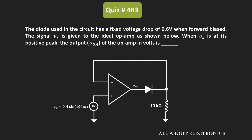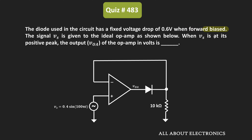Hey friends, welcome to the YouTube channel All About Electronics. So in this question, we have been given this open base circuit, and here we have been given that this diode has a forward voltage drop of 0.6V whenever it is forward biased. We have been asked to find the output voltage VOA, or the voltage at this node, whenever this input Vs is at its positive peak, that is equal to 0.4V.